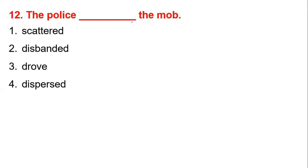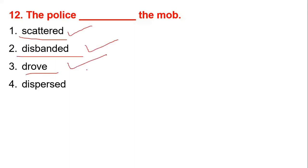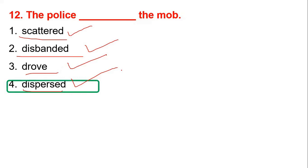Answer number 12: The police dash the mob. Mob means a crowd or public. The police want to scatter them - disbanded means to break up, disperse means to scatter. So the answer is disperse - to scatter the gathering.